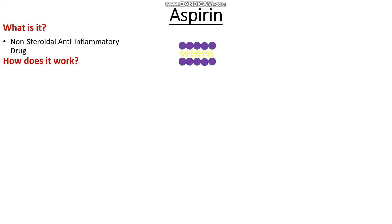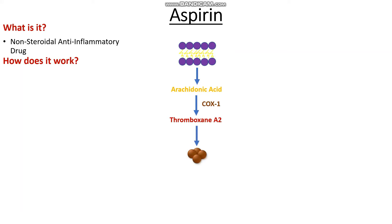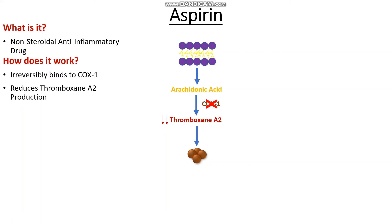So how does aspirin actually function as an antiplatelet? When our platelet is activated, the phospholipid bilayer is broken down into arachidonic acid by the action of an enzyme known as phospholipase A2. Aspirin does not exert a big role on phospholipase A2, but just know there is an enzyme which helps to convert the phospholipid bilayer into arachidonic acid. The arachidonic acid can then be cleaved into thromboxane A2 under the action of the COX-1, or cyclooxygenase-1, enzyme, and this leads to platelet aggregation.